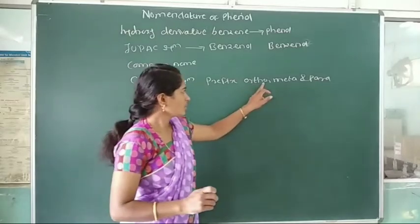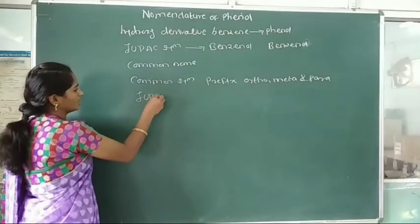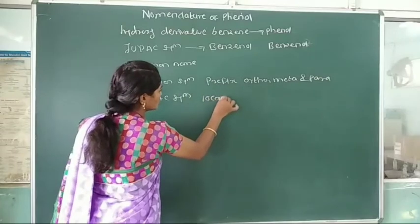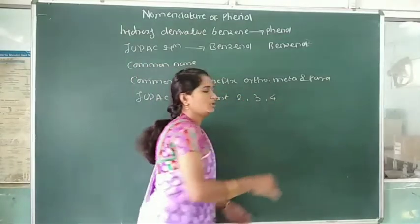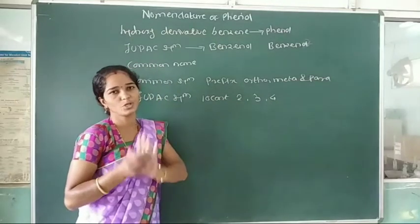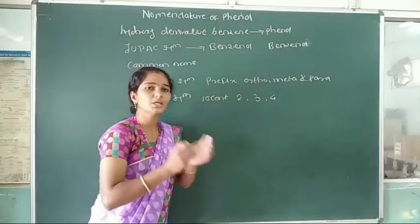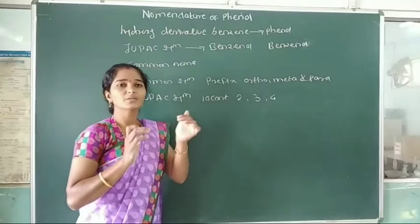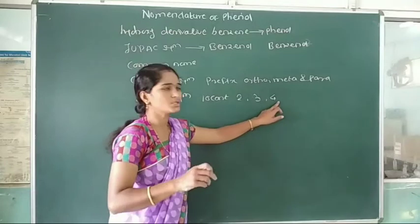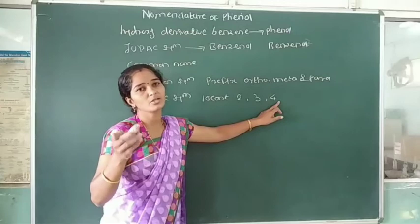These prefixes are ortho, meta, and para. In the case of the IUPAC system, we use locants 2, 3, and 4 to indicate the position of the substituent — that is, which carbon atom the substituent is attached to is indicated by the numbers 2, 3, or 4 in IUPAC-named substituted phenols.